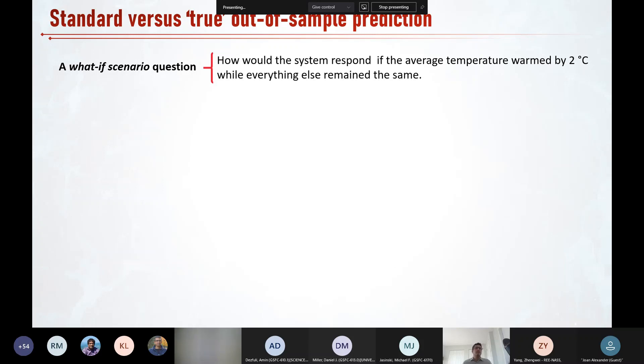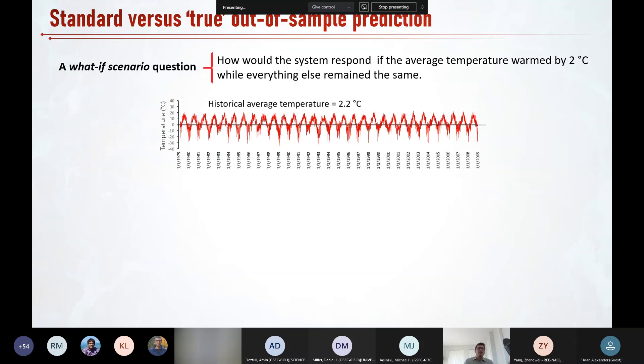So to further elaborate on this point, I took a stress test approach via a what-if scenario question to test and compare the performance of both models in true out-of-sample prediction. Basically, under conditions that have not fully been seen in the process of model development and calibration. The question is how the system would behave if the average temperature warmed by two degrees Celsius while everything else remained the same. So to assess this scenario, both calibrated models were fed a new temperature time series obtained by adding two degrees Celsius to all daily temperature values. So these new synthetic inputs roughly provide a picture of what might happen in the watershed under global warming. The modeling results under such scenarios, as you know, are typically used to inform policymaking for climate change adaptation.